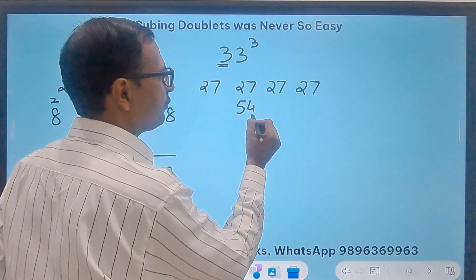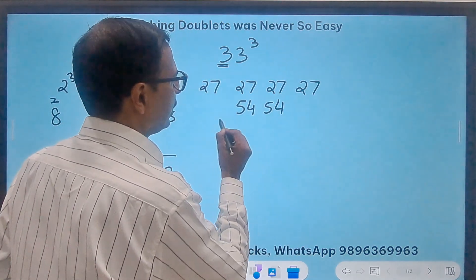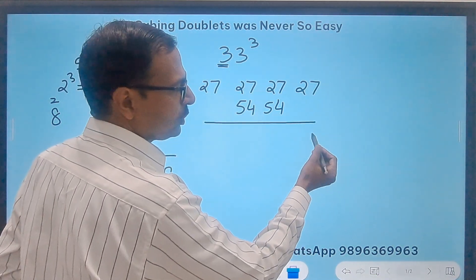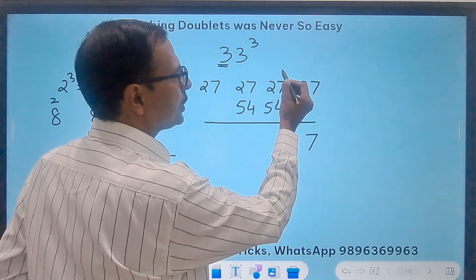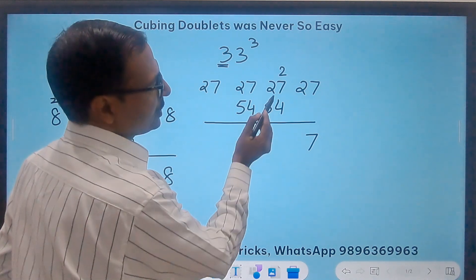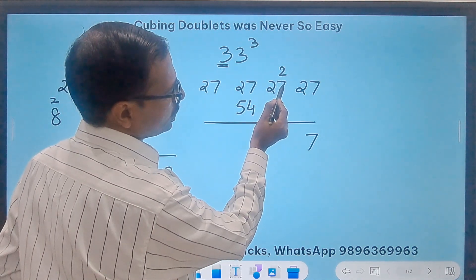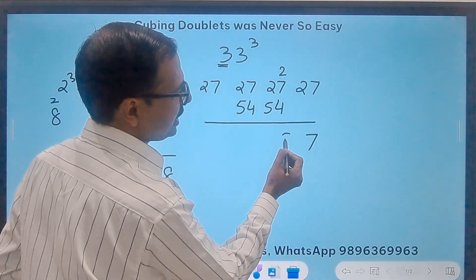And then 54, 54, the double of 27 below the middle two. And then start with the unit digit. 7. This 2 gets carried forward here. So 7 plus 2, 9 plus 4, 13. So 3 and a 1 carry.